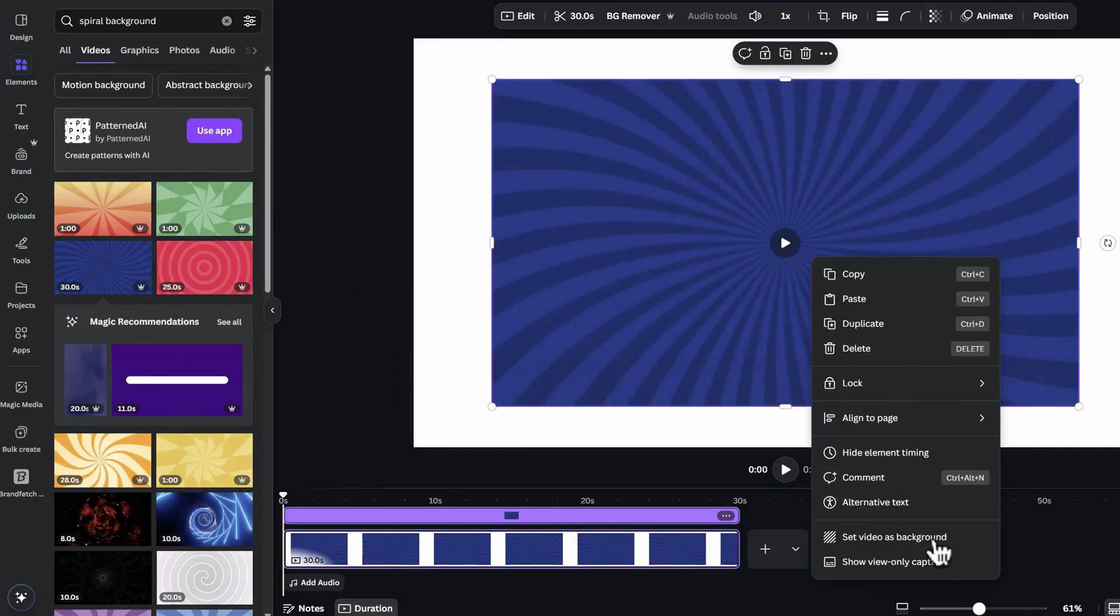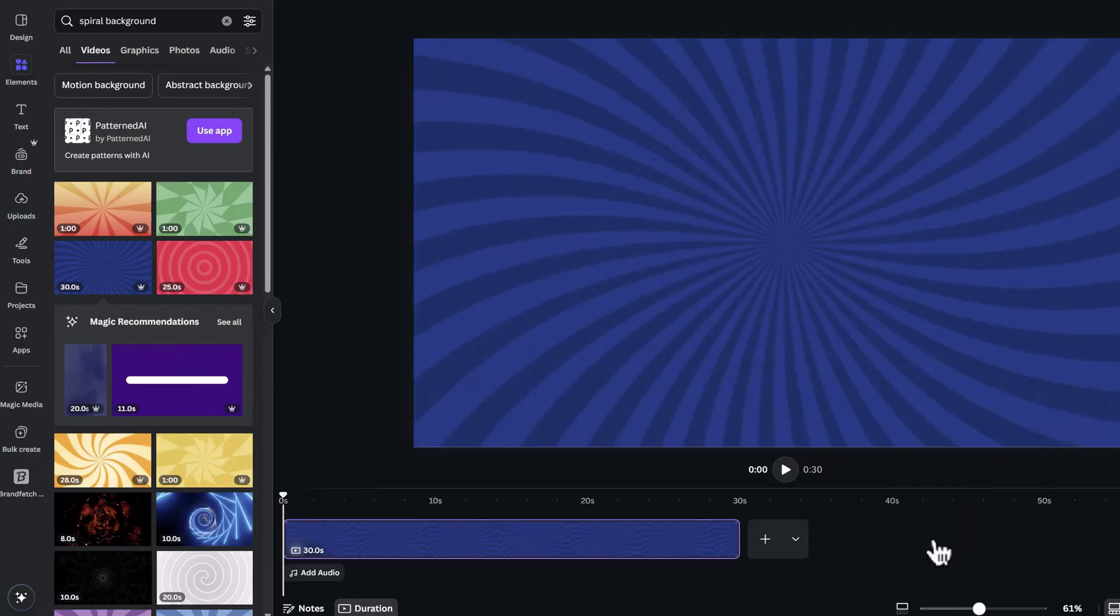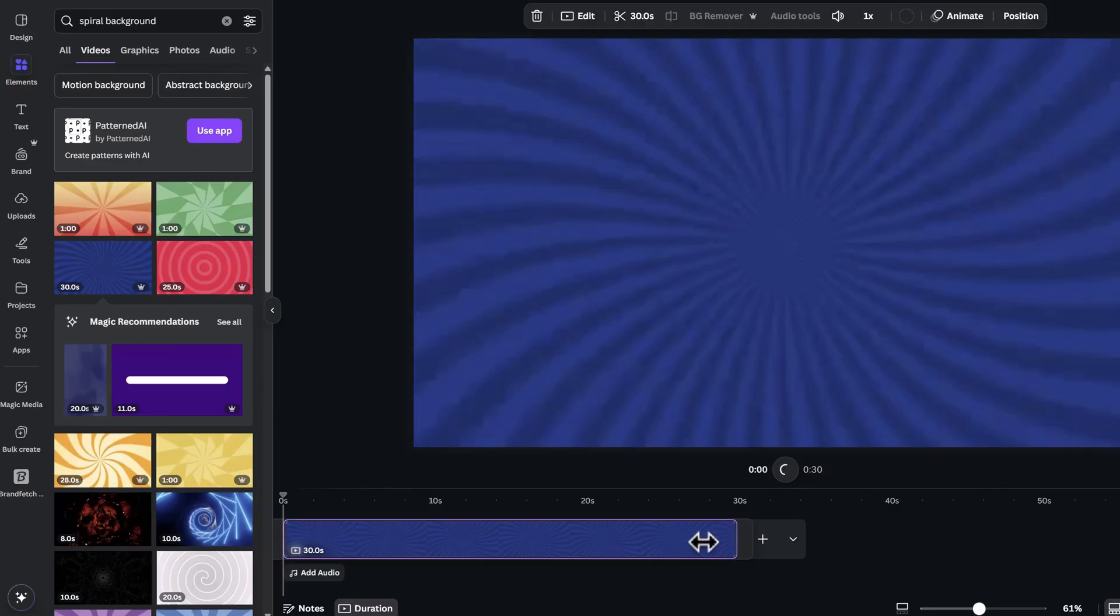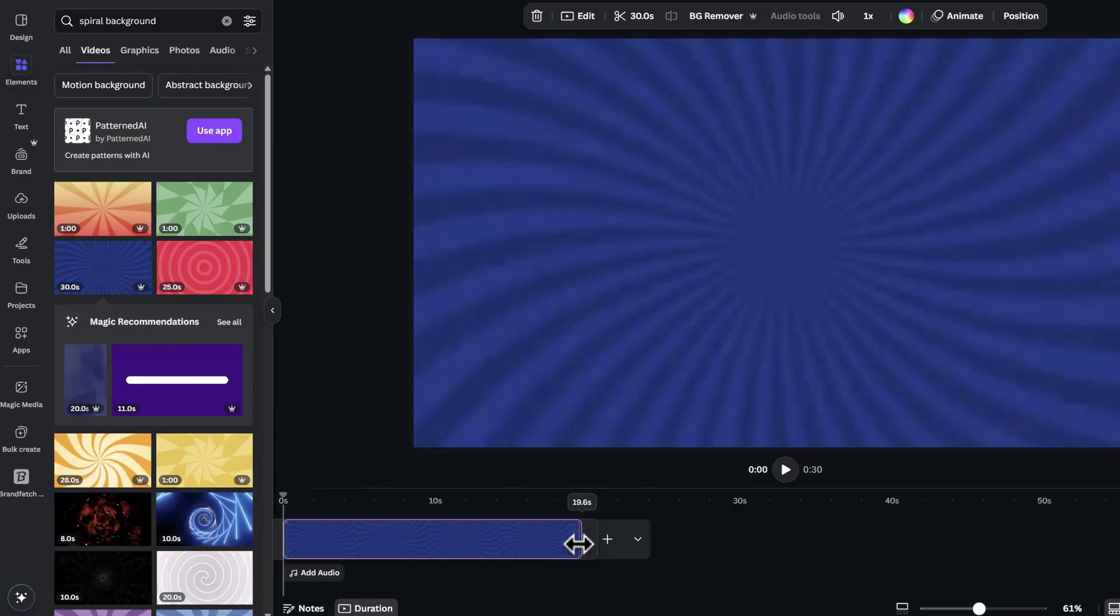Right click on it, and set it as the background. Looking at popular videos, we need each scene to be less than 20 seconds, so I will trim this to around 19.5 seconds. Next, add a rectangle by clicking on letter R on your keyboard.